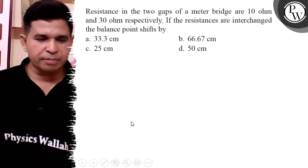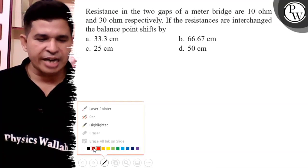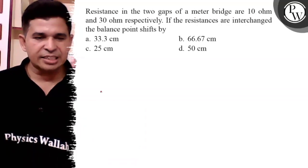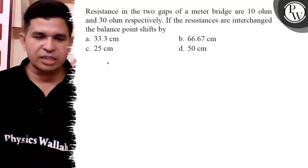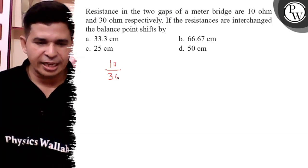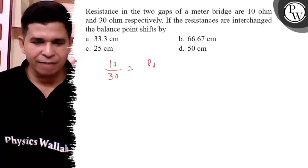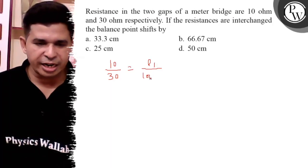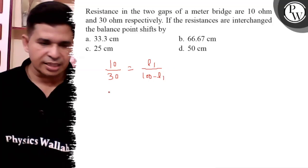We know that in meter bridge there are two gaps, left and right gap, and balancing length is always measured from the left hand side. So 10 upon 30 is equal to L1, the balancing length, over 100 minus L1, the right side balancing length.